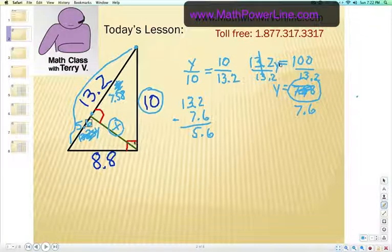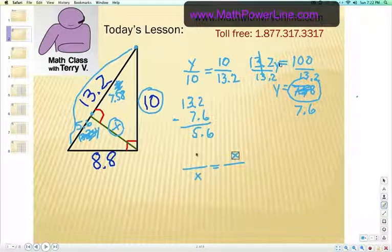Now we use the other geometric theorem, which says that the altitude, which we're going to call x, is the geometric mean between the two parts of the hypotenuse, which we just found. So 7.6 and 5.6.